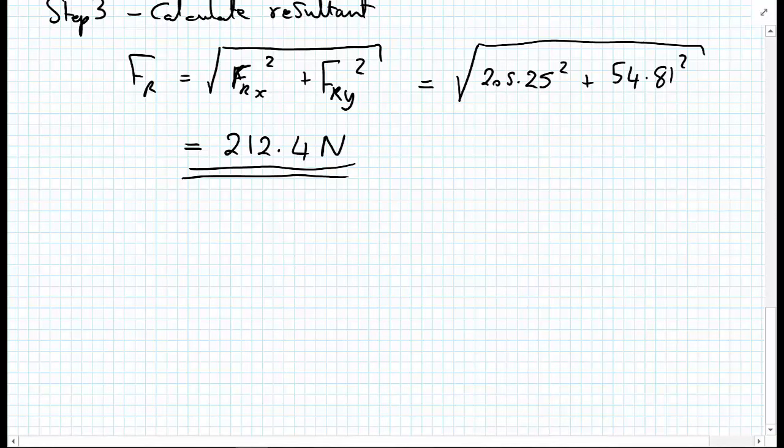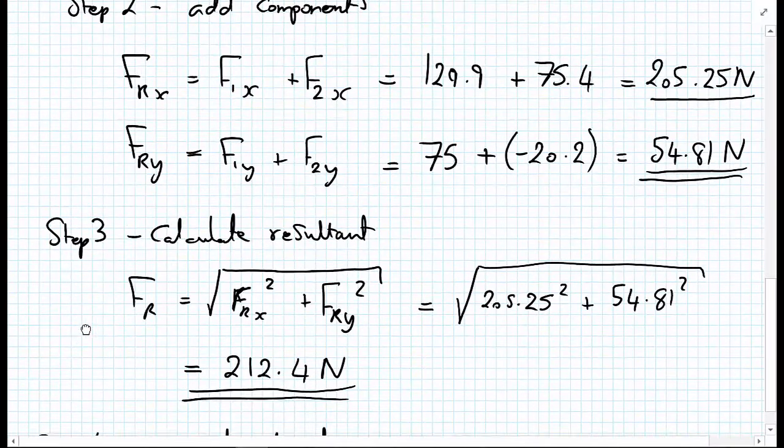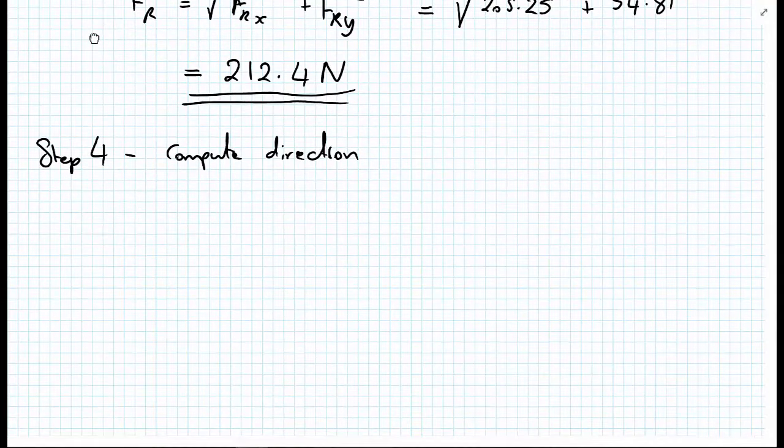Now we have the magnitude, we're going to compute the direction. Step four, compute direction. Again, it's quite useful as a sanity check. So we have 205.25 in the X direction.